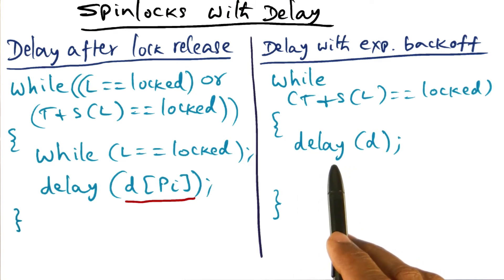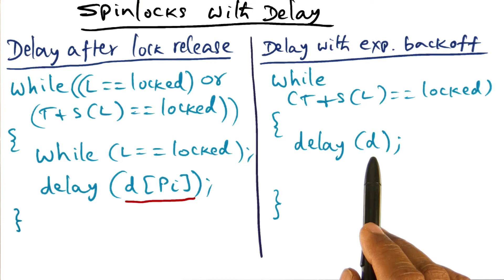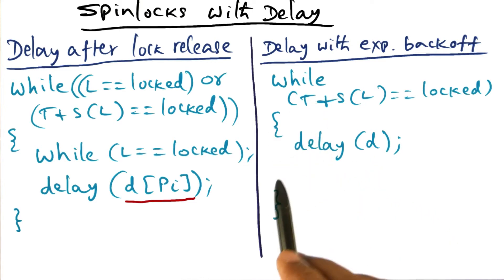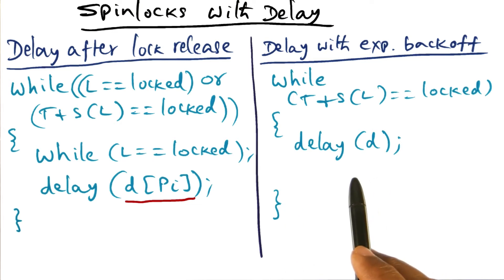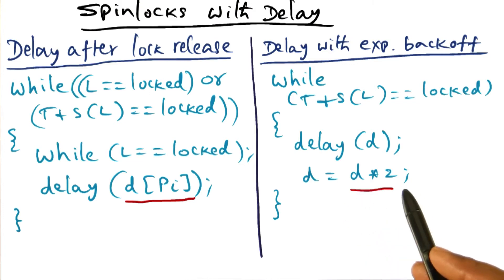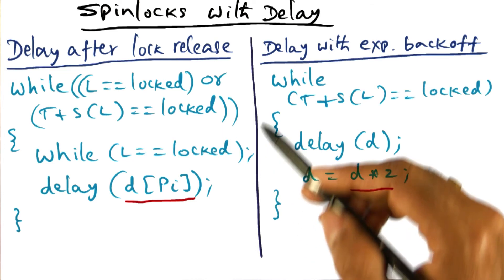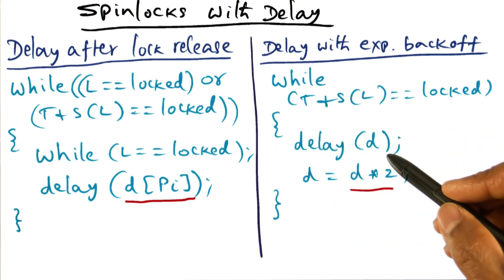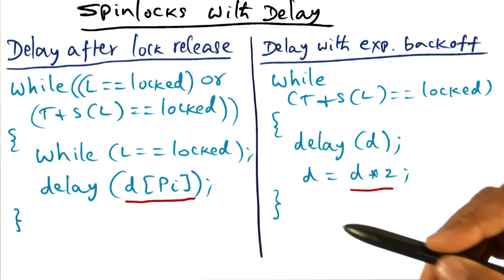And the idea here is, this delay is some small number to start with. But suppose I go and check, and I find it again to be locked. What I'm going to do is, the next time around, I'm going to increase the delay. That's why it's called exponential backoff. So I'm increasing the delay, doubling the amount of delay. So that the next time, if I don't find the lock to be available, I delay by twice the amount from the previous time.